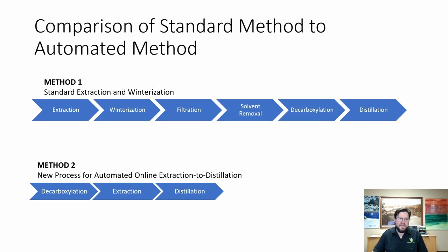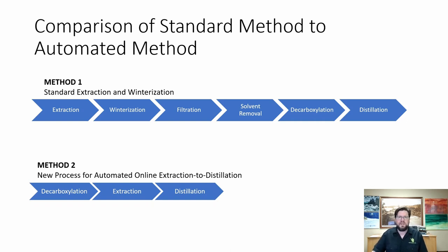What I'm going to be comparing today is two methods for elimination of winterization. The first method is the traditional extraction and winterization we just discussed: extraction, winterization, filtration, solvent removal, and distillation. If you're going to run material into your extractor that is not decarboxylated, then you're going to have to run a decarboxylation step, which involves cooking the oil at a very high temperature, degrading a lot of the terpenes you're trying to preserve. The second method is our new process for online extraction to distillation, where we do the decarboxylation ahead of time, preserve the terpenes ahead of time, and then go from extraction directly into distillation.